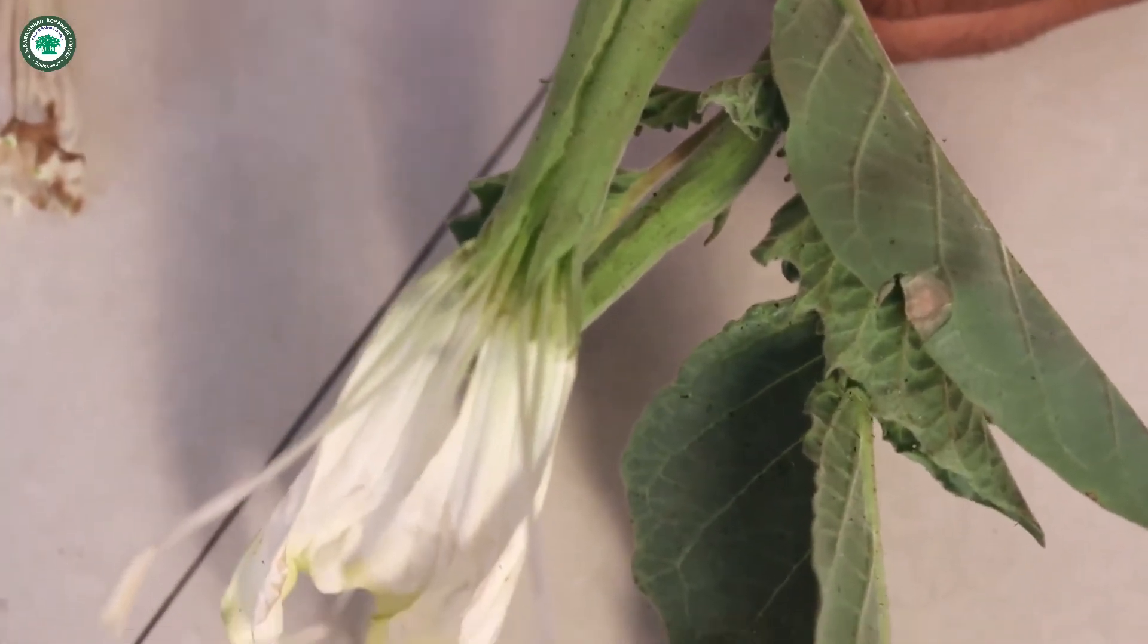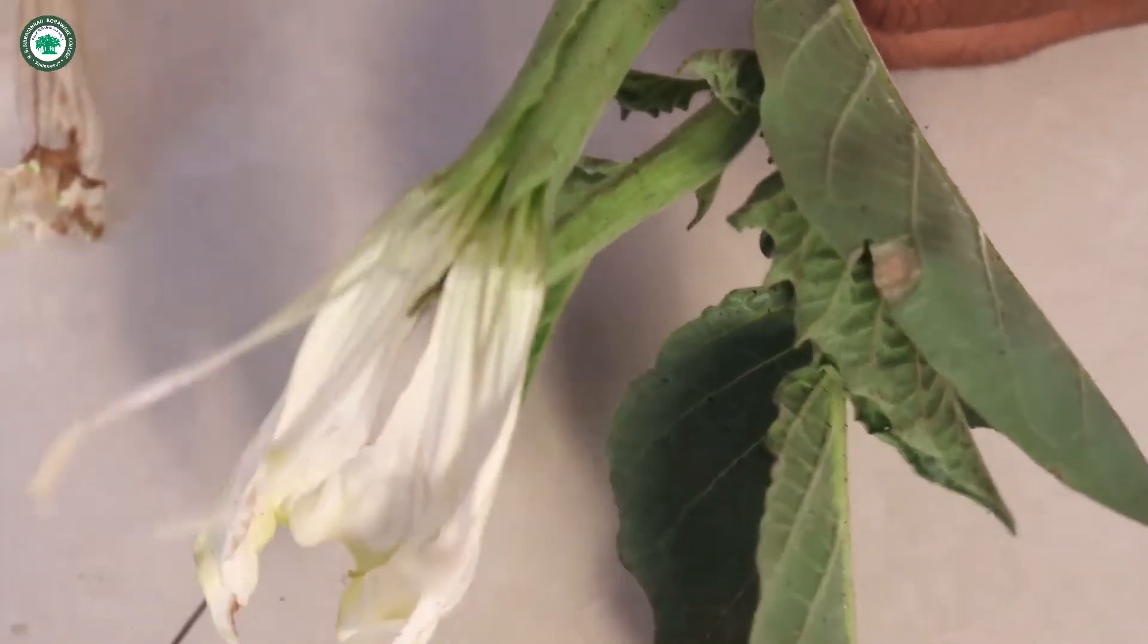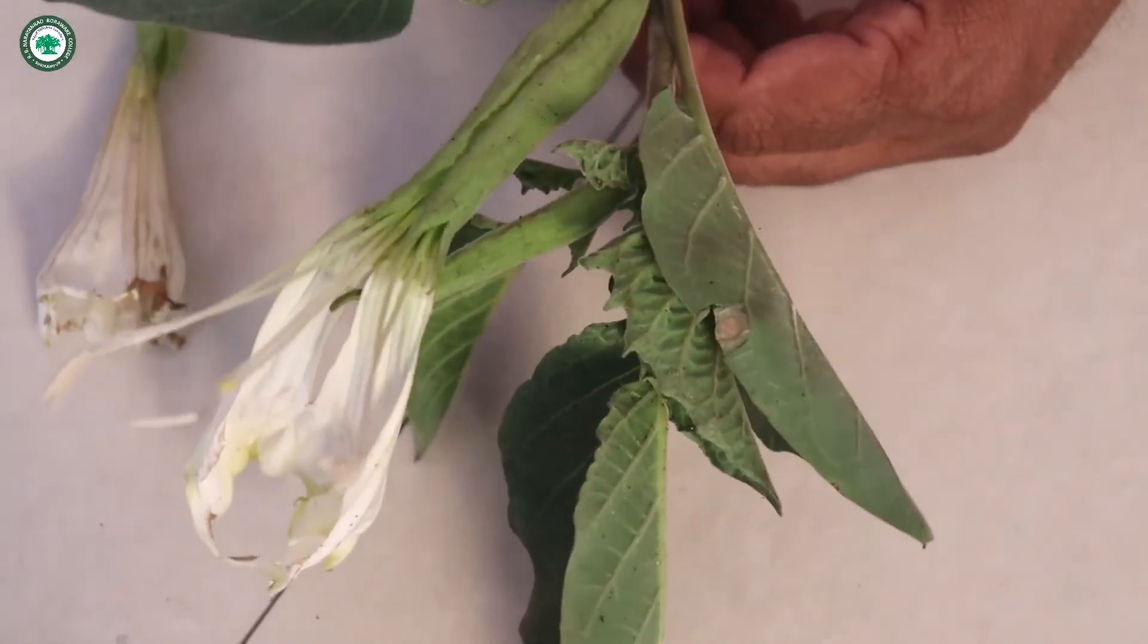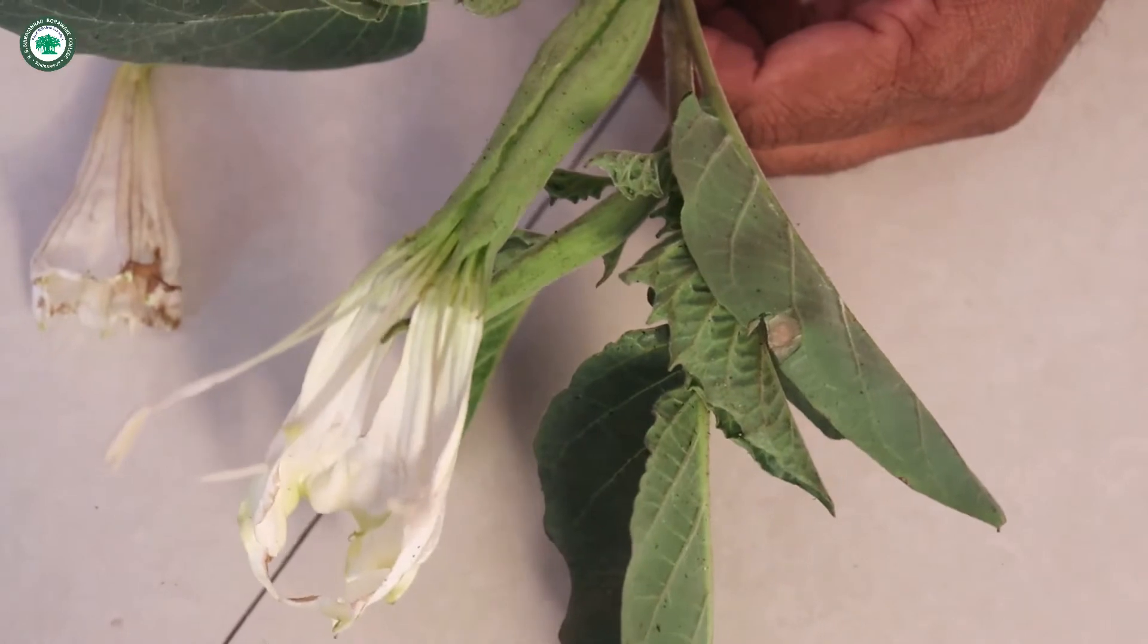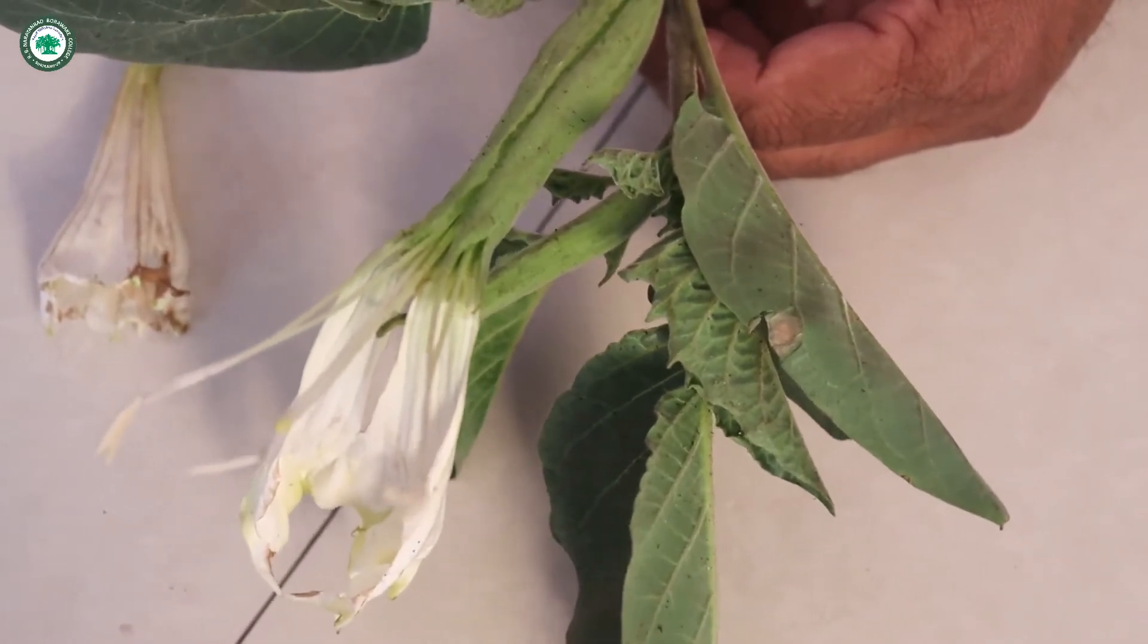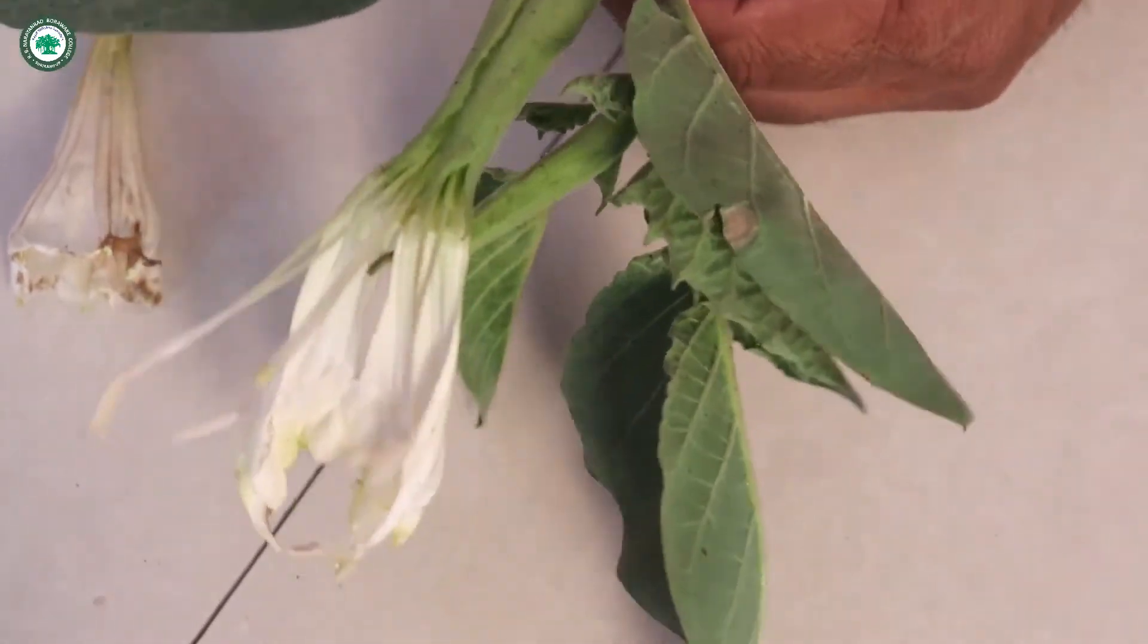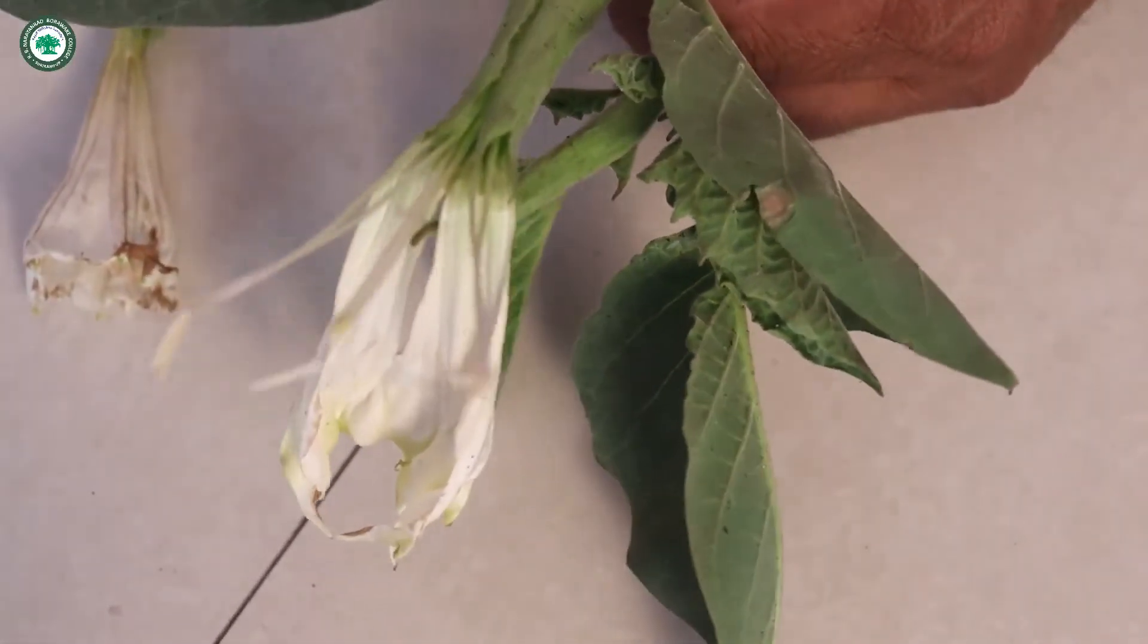Then complete because there are all the floral whorls that is the calyx, corolla, androecium and gynoecium all are there. So it is called as the complete. Then actinomorphic, then bisexual, pentamerous. That means calyx, corolla and androecium are five in number. So it is called as the pentamerous. Then it is hypogynous because ovary is superior.